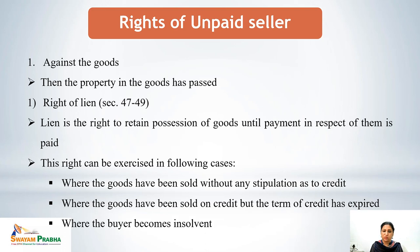The right of lien can be exercised in the following cases: one, where goods have been sold without any stipulation as to credit; two, where goods have been sold on credit but the term of credit has expired — say the credit period was three months, the three months have passed and payment is still not made; and three, where the buyer has become insolvent and is not in a position to pay for the goods.